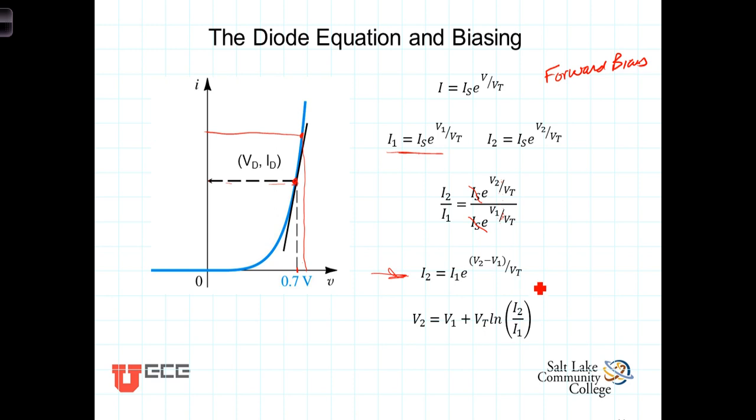Now we can rearrange this equation here and solve for the difference in V2 over V1 by taking a log of both sides and rewriting it. Then we can say that V2, the voltage here at the second bias point, is equal to the initial voltage plus the thermal voltage times the log of the ratio of the two currents. These two equations allow us to move from one bias point to another bias point on the graph for a given diode.